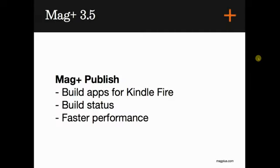Let's start with what's new in Magplus Publish. At the moment you can build apps for iPad and Android tablets, but upon release 3.5 you will be able to build Kindle Fire apps. We also now have the build status in Magplus Publish for your build, so you can see whether or not the build failed or was successful. We have also made several changes behind the scenes to make the site a lot faster.